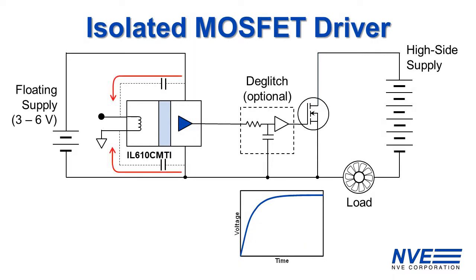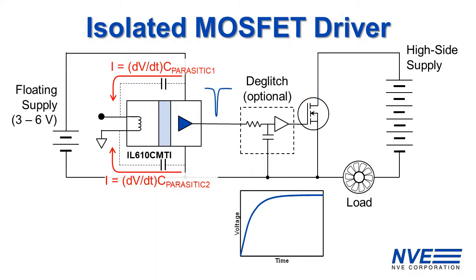This can cause parasitic currents through stray capacitance proportional to dV/dt. Isolators are designed to cancel these common mode currents, but the cancellation is not perfect, which is why we have CMTI specifications. Fortunately, our isolators are extremely well matched and therefore quite tolerant of common mode transients.